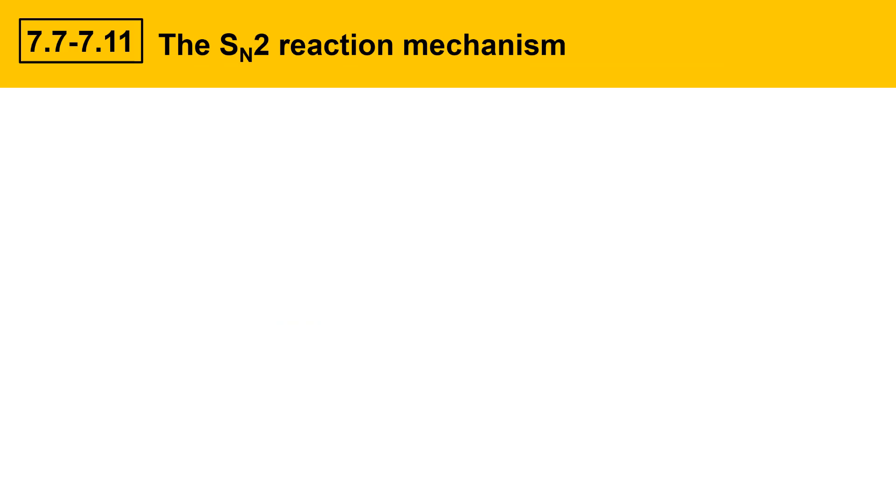Here are some details on the SN2 substitution mechanism. In this example, I'm going to use this OH- as a nucleophile, and here's an alkyl halide. It's got a carbon attached to a bromine, and I've listed the partial positive and partial negatives here on those atoms.